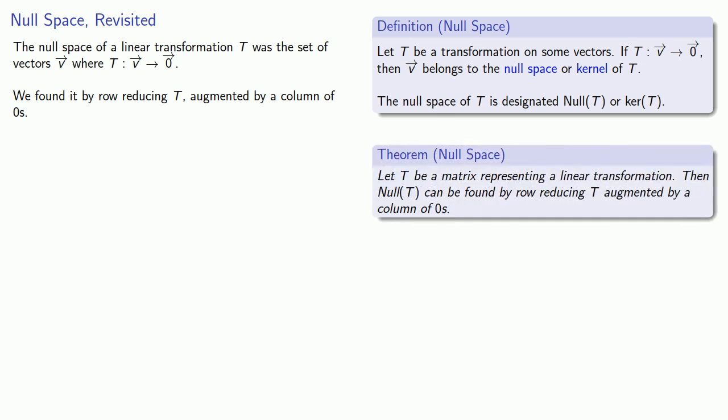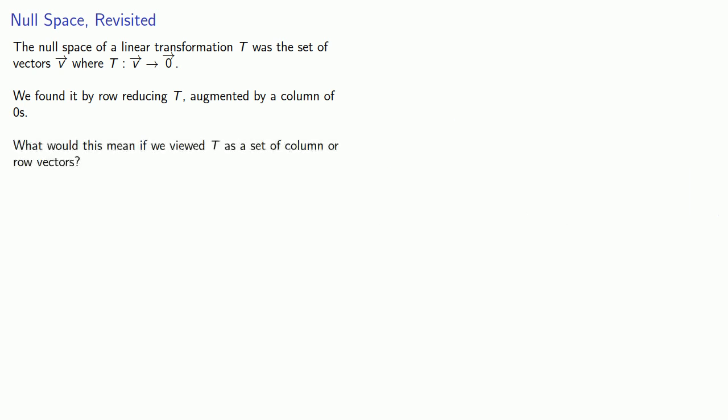We found it by row reducing the transformation matrix augmented by a column of zeros. Well what happens if we view T as a set of column or row vectors? How can we then find the null space?